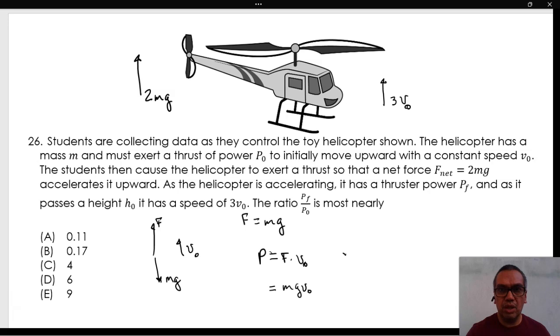After that, a larger thrust is applied so that the net force upward is 2mg. From this we conclude two things: On the one hand, the acceleration of the helicopter must be 2g upward. And on the other hand, the thrust force exerted by the motor is 3mg, because it is the only way that the net force is 2mg upward.